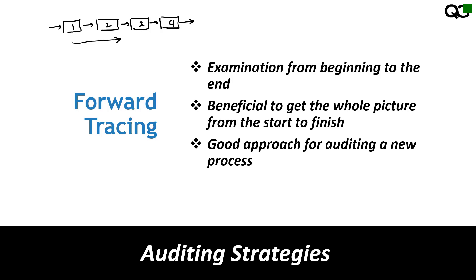In a manufacturing process going through four steps, the auditor follows a particular item through step one, then to step two, checking whether all the requirements related to that are being met or not. The auditor follows from point one to point four — this is forward tracing.